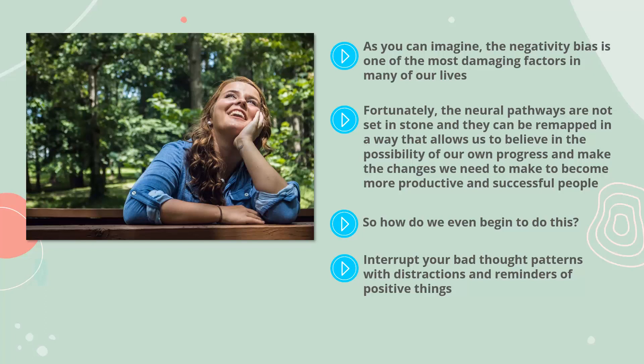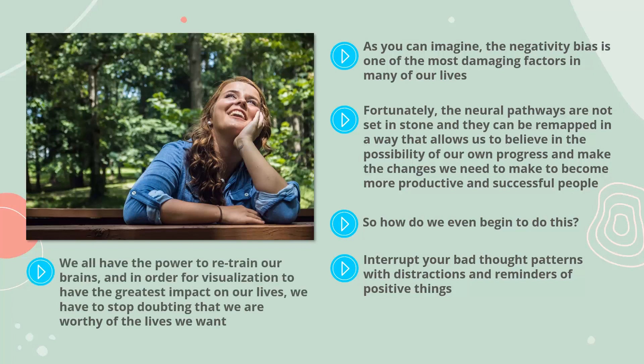So how do we begin to do this? The first step is to practice mindfulness. Become aware of your destructive patterns and the thoughts that you have that interrupt your ability to focus on the good in your life. Interrupt your bad thought patterns with distractions and reminders of positive things. One of the ways that you can do this effectively is to write gratitude journals. You can also try mindfulness meditations, uplifting conversations with your support network, and looking at pictures of things that make you smile.